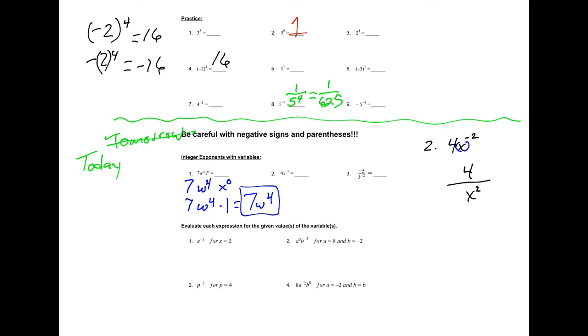And number 3, negative 5 over k to the negative 2. Remember with a negative exponent it's going to flip the variable, so if it's on the bottom which it is, it's gonna flip it up to the top. So that top one is gonna be negative 5, that just stays there.